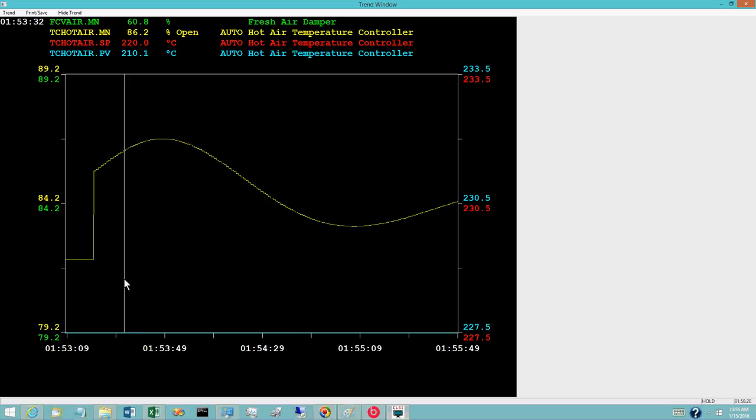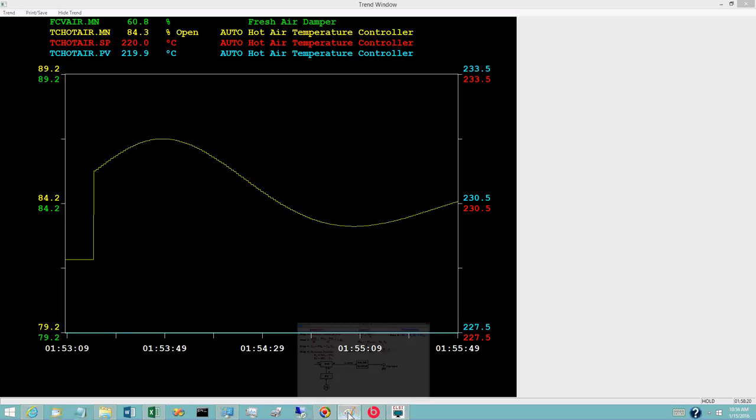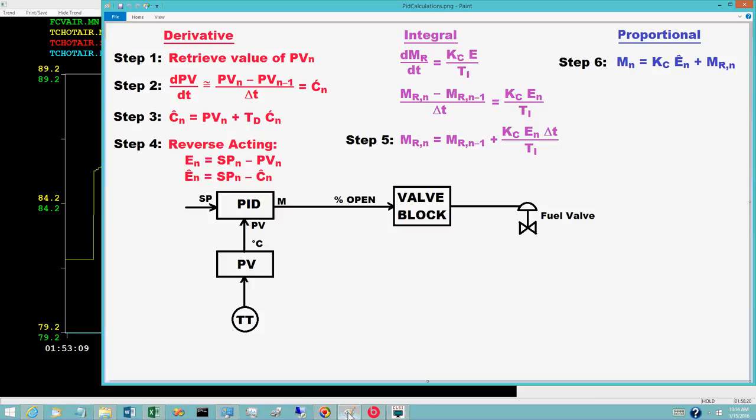The present objective is to present a computational procedure for the basic PID control equations with derivative based on PV. Obtaining a practical computational procedure requires that additional issues be addressed. These will be mentioned, but the details will be diverted to a subsequent video.